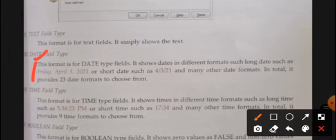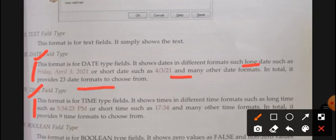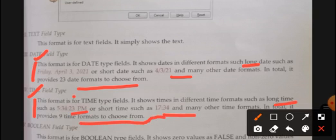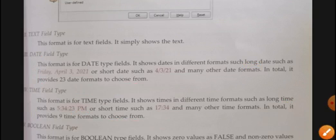Now you have to write all of this. Date time field and about this, and time and about this. Now I'll read about this: This format for date time field shows date in different formats such as long date and short date. In total there are 23 date formats. We can't explain all of them, we'll tell you briefly. This format for time shows time in different time formats such as long time and short time. In total there are 9 time formats to choose from.